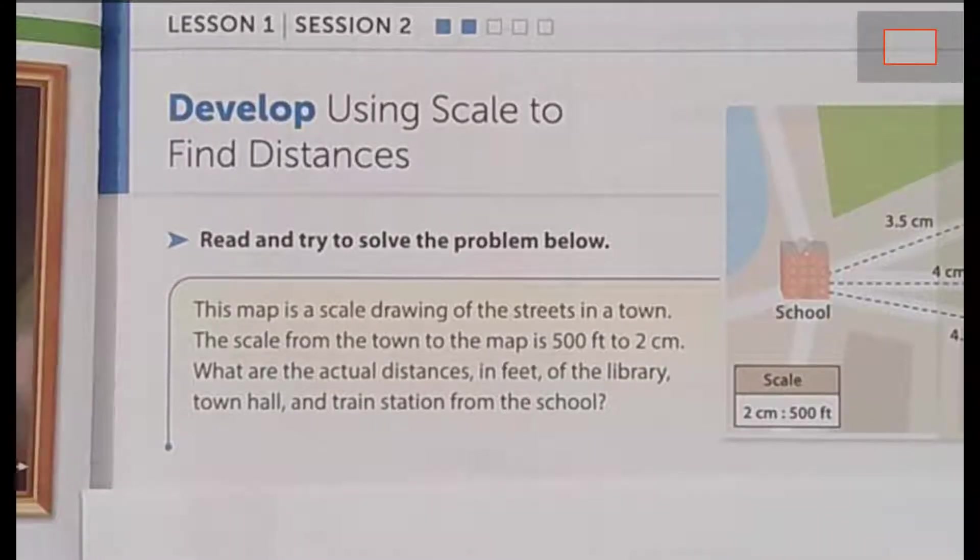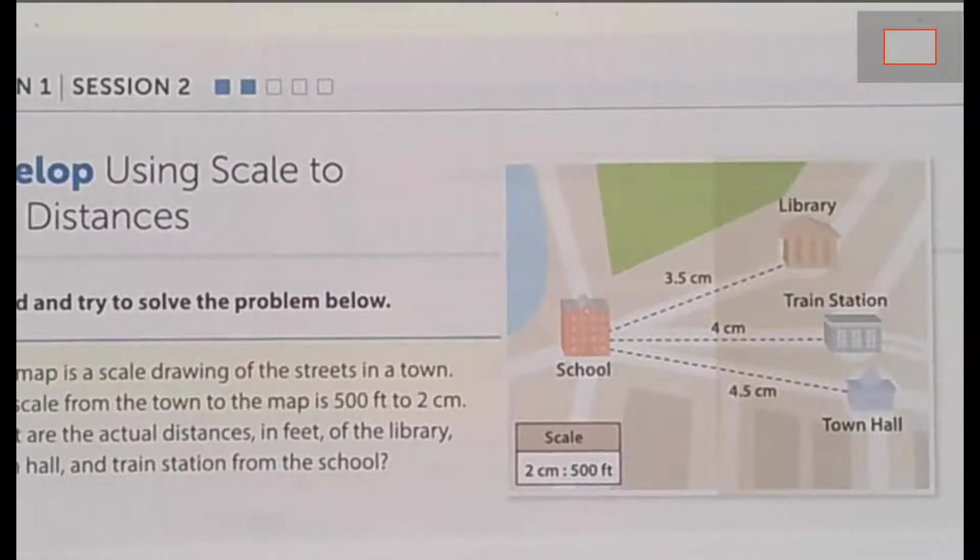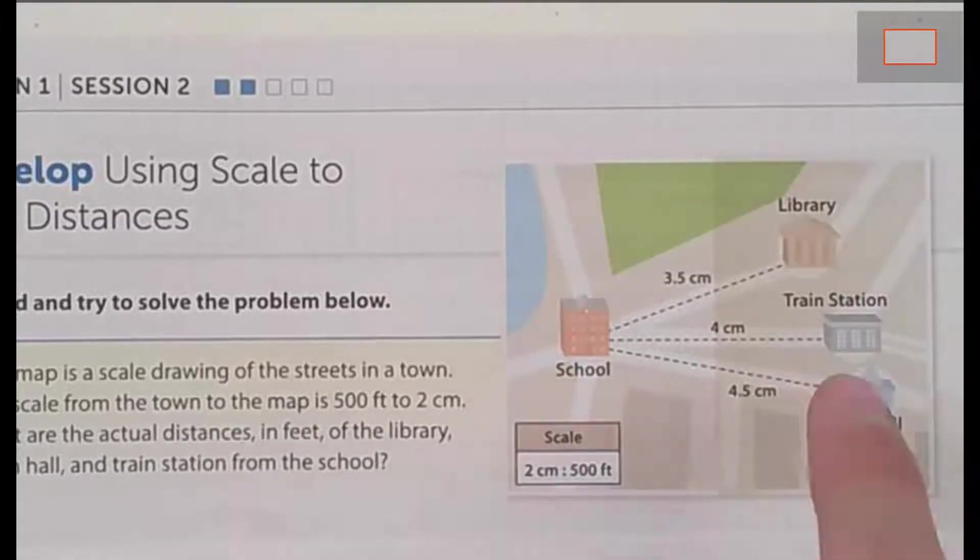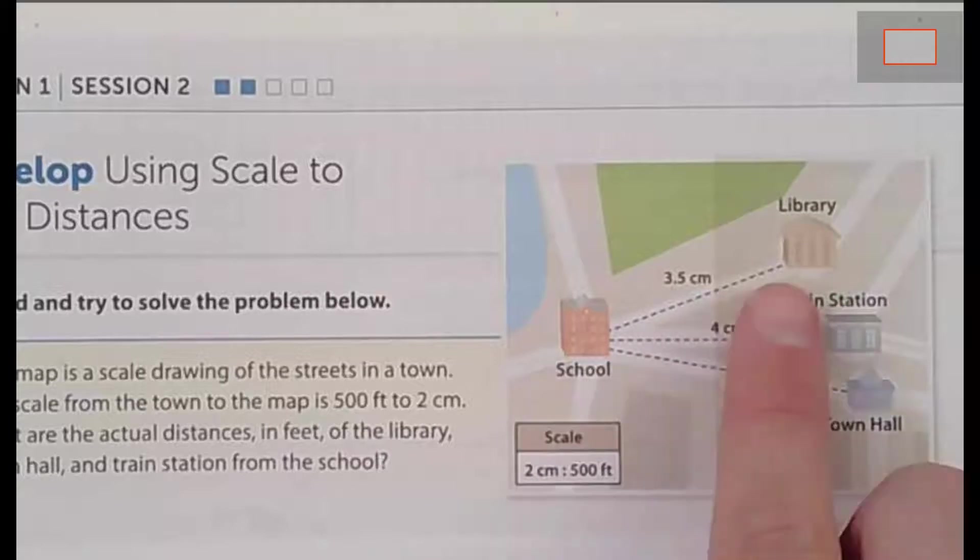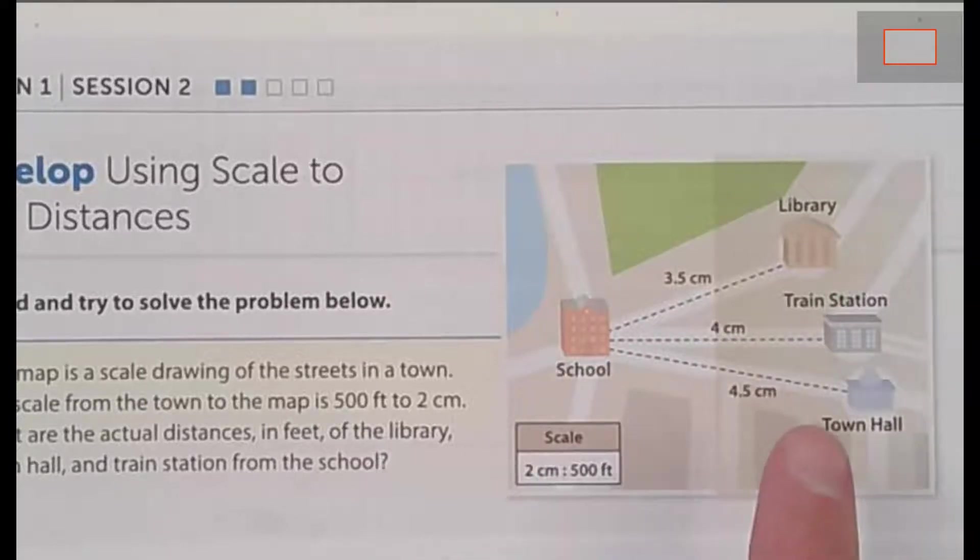Today we're going to be looking at this problem where I'm giving you a map of a town. I'm saying here's the school and here's the distance between the library, the train station, and town hall. Now there's a scale to this map. These things aren't actually 3.5 centimeters away from each other because then buildings would literally be right on top of each other. This is saying that 2 centimeters is equal to 500 feet.